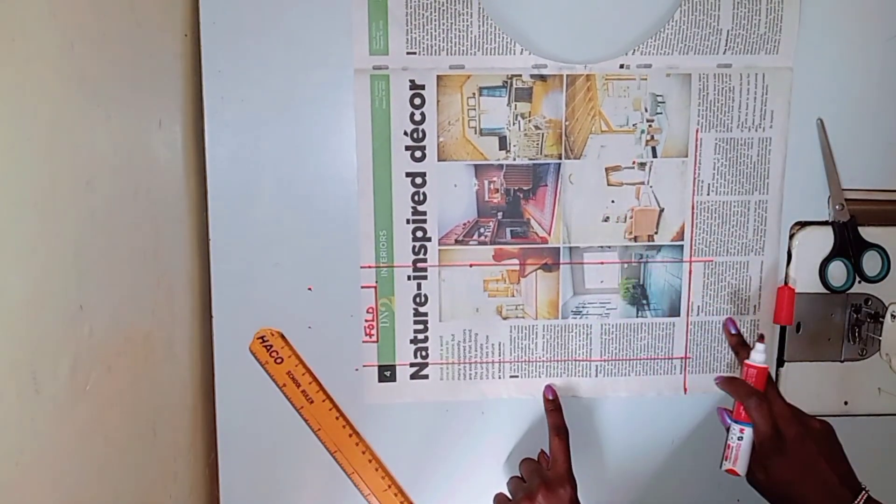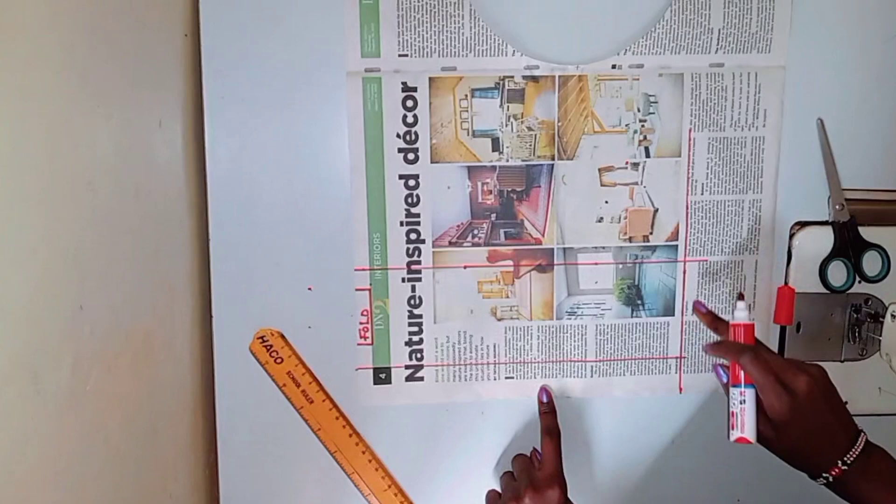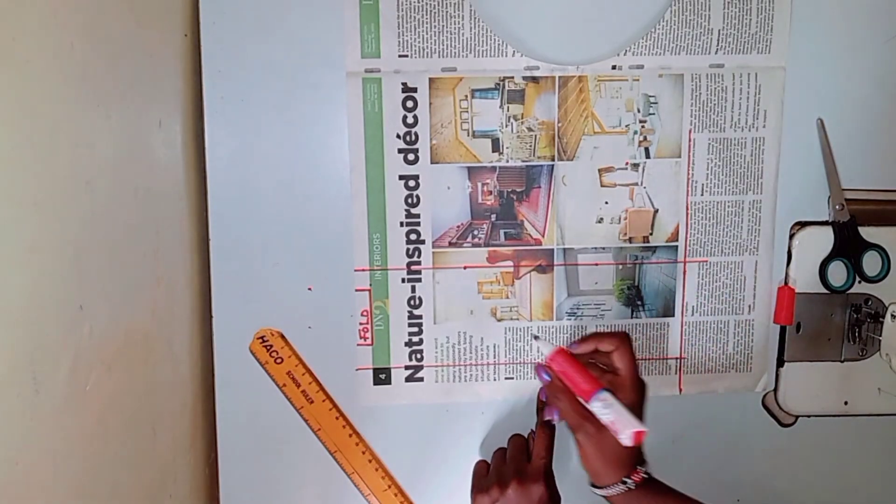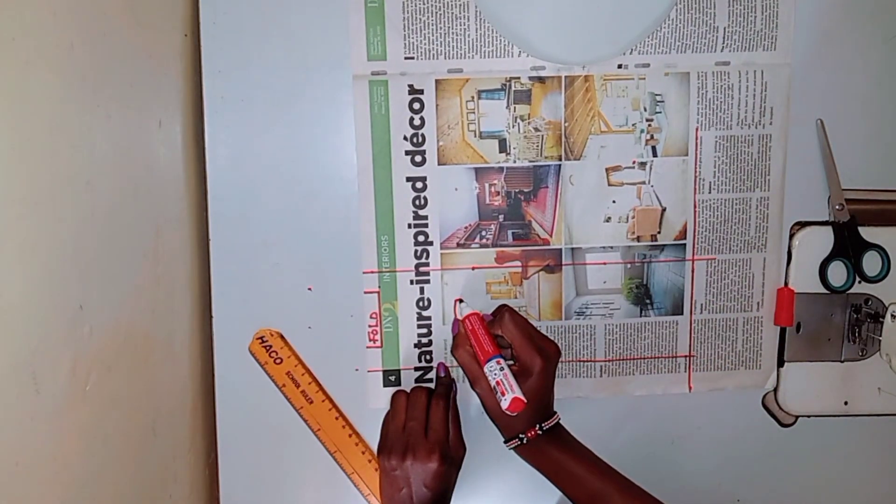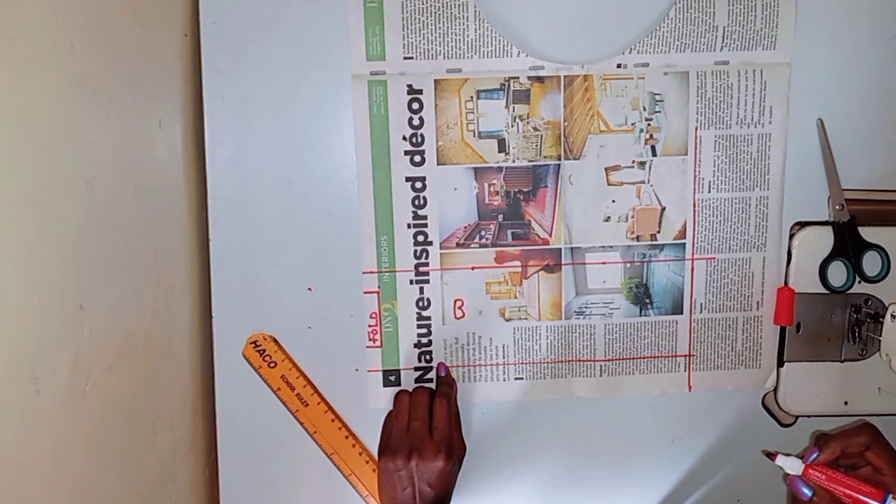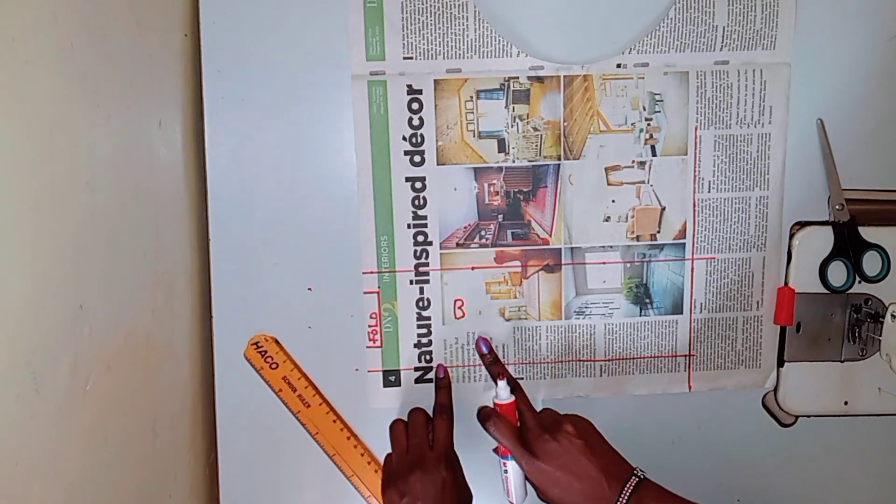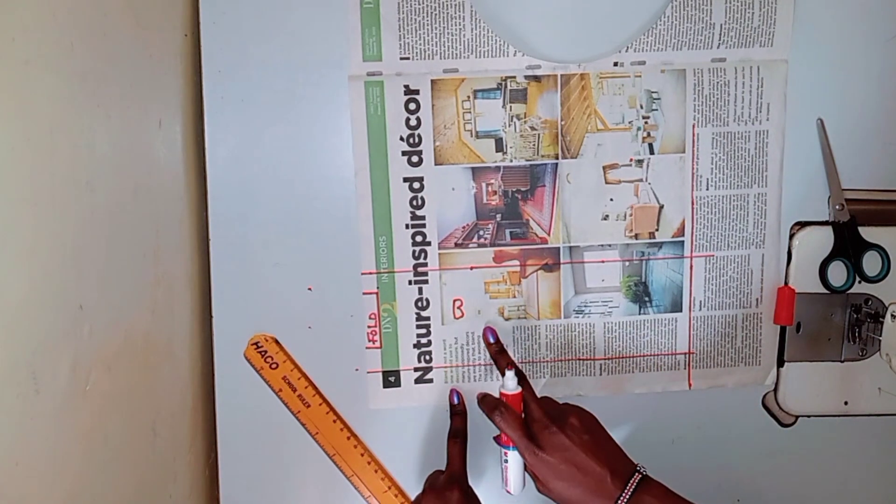After creating that rectangle, I'm going to add a half inch seam allowance all around that pattern except for the part that I've written 'fold,' because that part is on fold. I'm going to explain later.